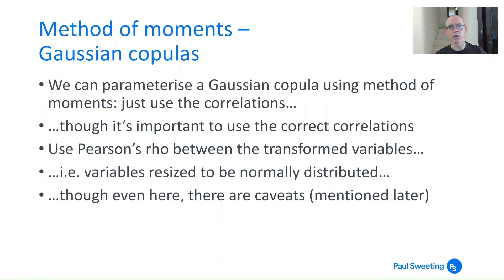We can parametrise a Gaussian copula using method of moments as well. All we need to do is to use the correlations. But it's important to use the correct correlations. As a starting point, you could just use Pearson's rho calculated between the transformed variables, which is going to be different to the Pearson's rho calculated based on the raw data. What you'd need to do is to resize the data that you've got into a normal distribution, and then calculate the correlations between those. But even here, there's a few caveats.